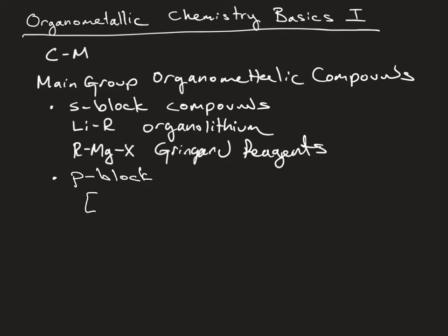For example, tetraethyl lead, which was used as an anti-knocking agent in gasoline, is an example of a P-block main group organometallic compound.